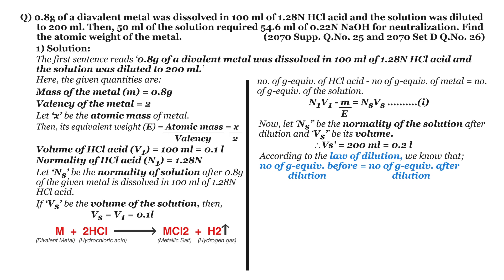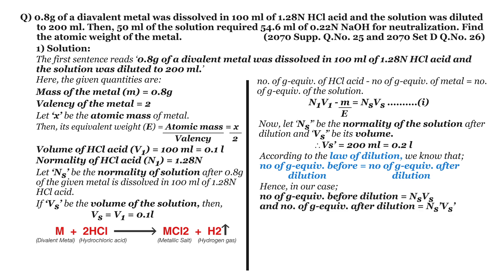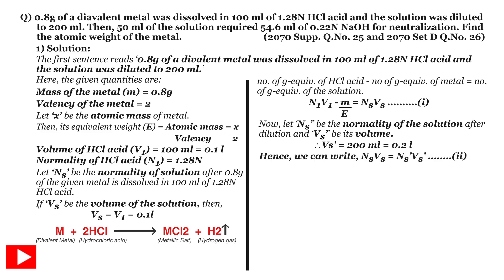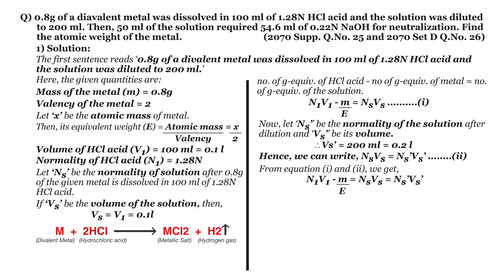There is no change in the number of gram equivalents of solution during dilution. In this process, the concentration changes due to the change in volume but not due to the change in gram equivalents. Hence, gram equivalents before dilution equals Ns·Vs, and after dilution equals Ns'·Vs', so Ns·Vs = Ns'·Vs'. Let this be equation 2. From equations 1 and 2: N1·V1 − M/E = Ns·Vs = Ns'·Vs'.